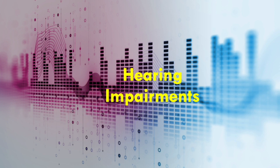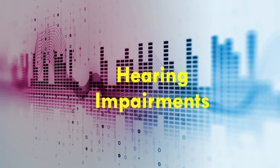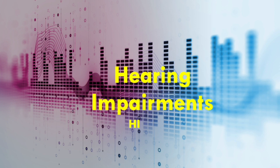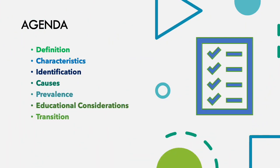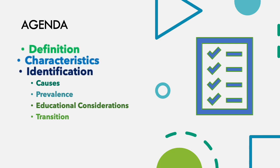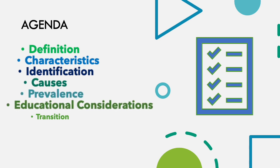Hearing impairments, abbreviated as HI. This video will cover the definition, characteristics, identification, causes, prevalence, educational consideration, and transition for hearing impairments.